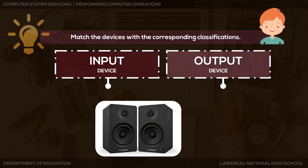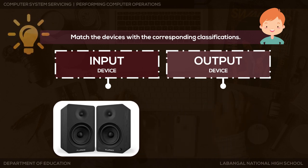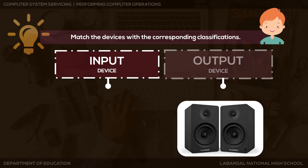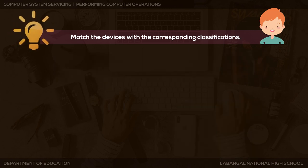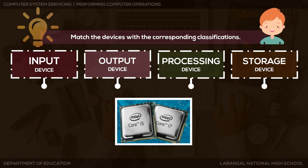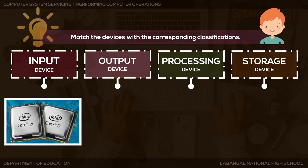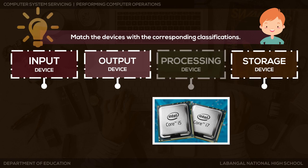How about a speaker — is it an input or output device? A speaker is an output device. Let's make it a little more complicated: now you are going to choose among the four classifications of hardware — input, output, processing, and storage. We have the CPU — on which classification does it belong? Obviously, it's a processing device!